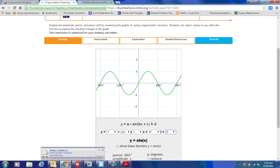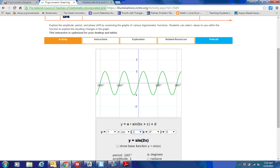You had trouble understanding why the period was the way it was, so we're going to change the value of B to see how that switches. Notice the period on the screen says 360, but when I change it to 2, notice how this same cycle goes from 0 to 180.